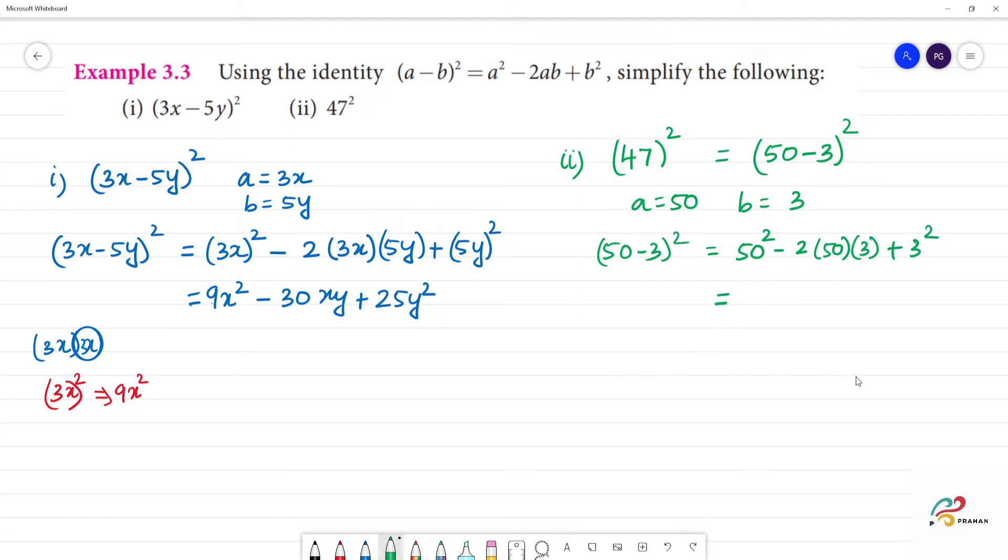50² is 50 into 50, that equals 5 into 5 is 25, so 2500. 2500 minus 2 into 50 is 100, 100 into 3 is 300, minus 9.